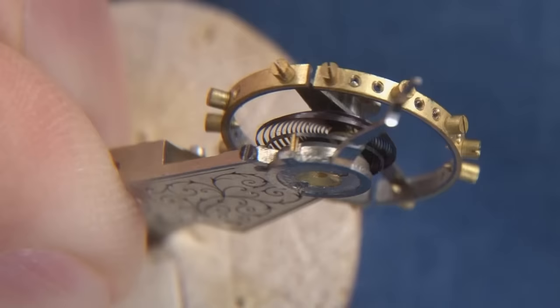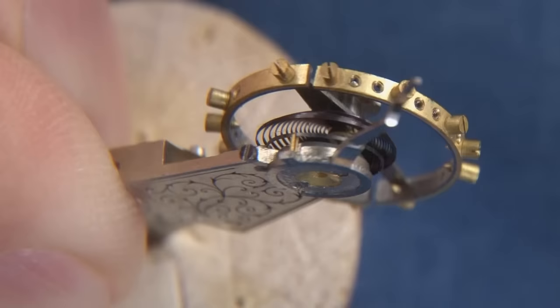So we have to change the effective length of the hairspring. The shorter the hairspring, the faster the roller table, between the guard banking pins, through the pallet arbor, through our escape wheel, all in a straight line.